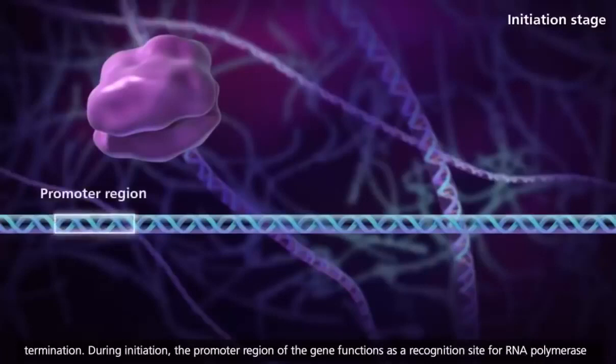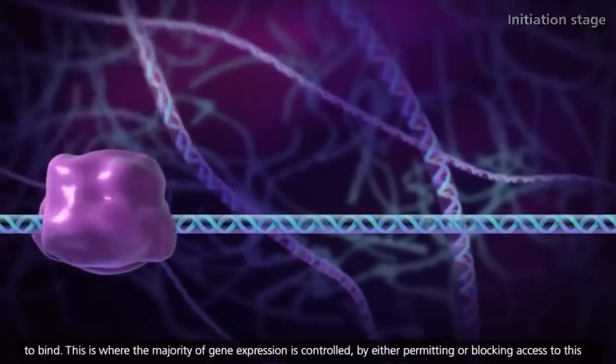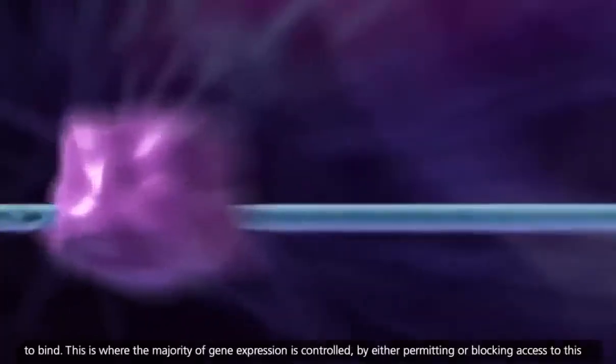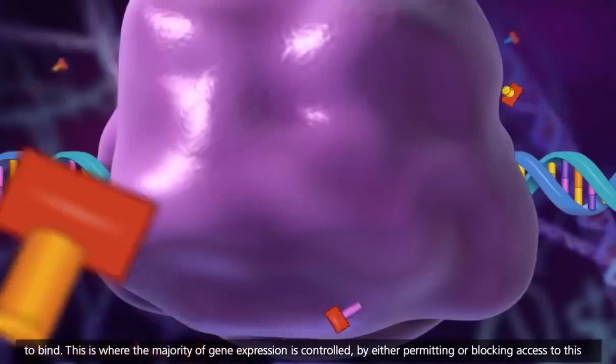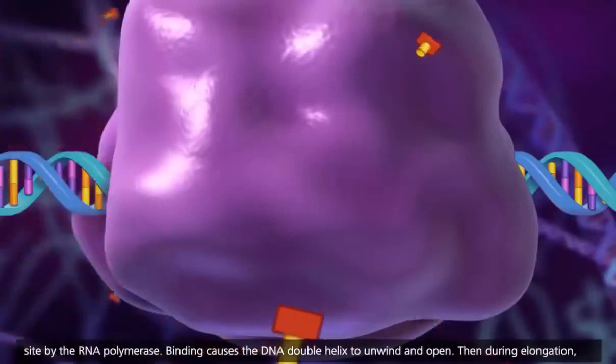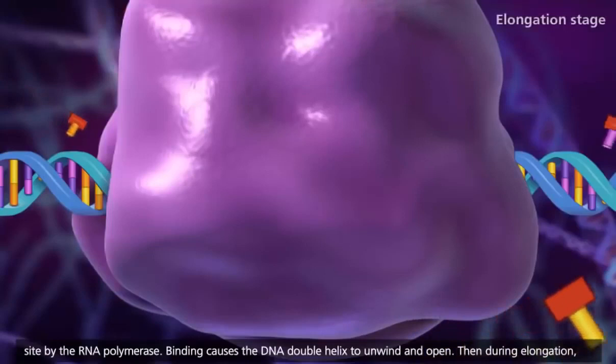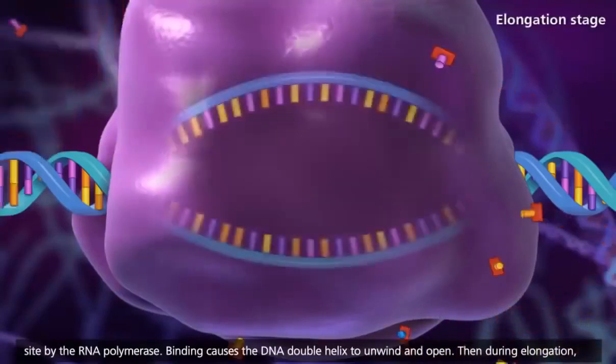During initiation, the promoter region of the gene functions as a recognition site for RNA polymerase to bind. This is where the majority of gene expression is controlled, by either permitting or blocking access to this site by the RNA polymerase. Binding causes the DNA double helix to unwind and open.